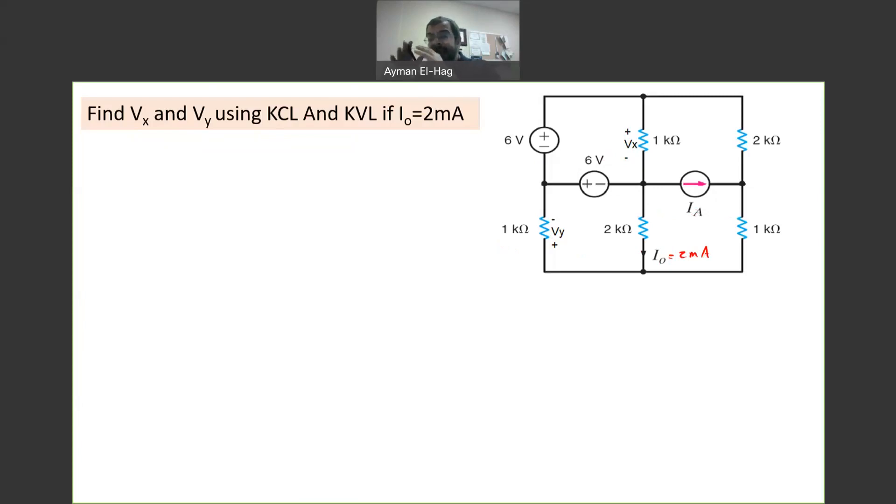Now, the classical approach, which is 90, 95% of the questions you have to apply, is you assign currents in every branch. So we will have here, this is I1, this is I2, this is I3, and this is I4.